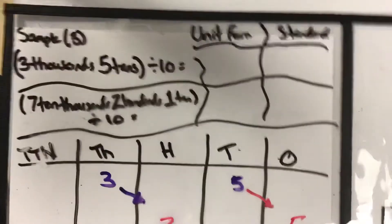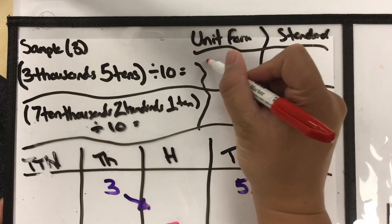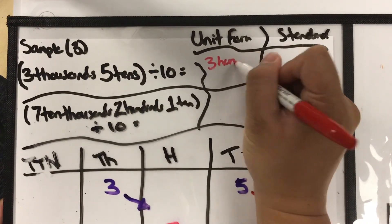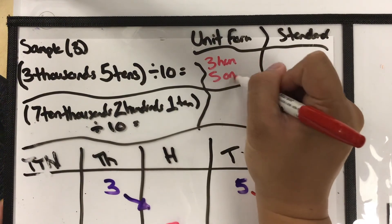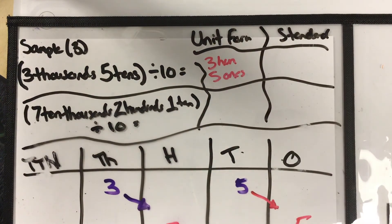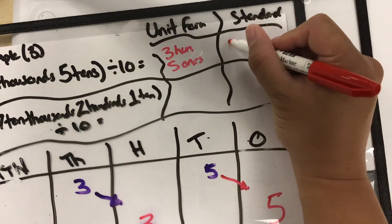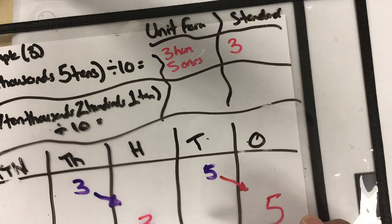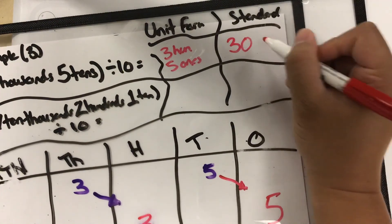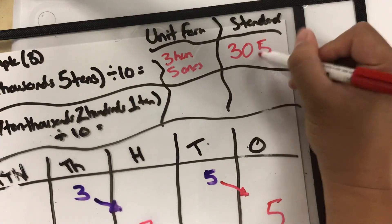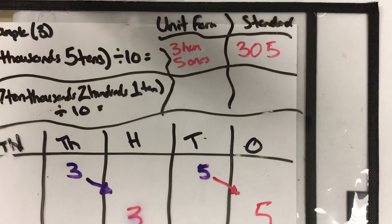So in our unit form, we have three hundreds, five ones. And you can shorten hundreds if you'd like to save some space. And then standard form is we have three hundreds. We have zero in our tenth spot and we have five in our one spot. So we have three hundred and five.